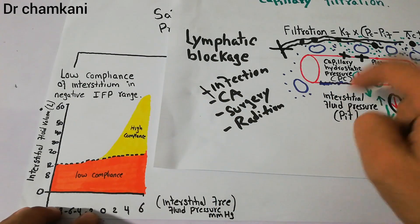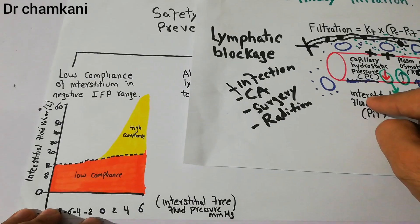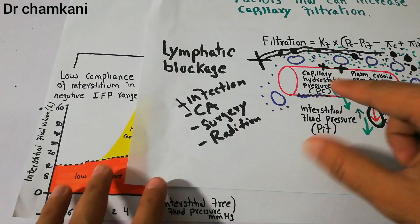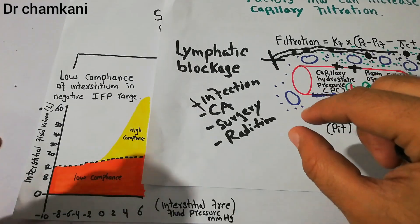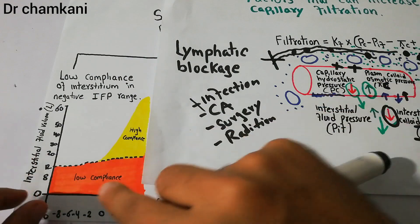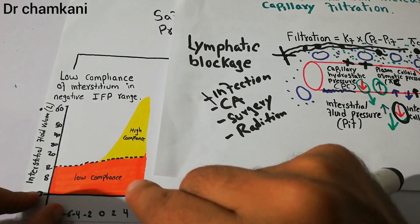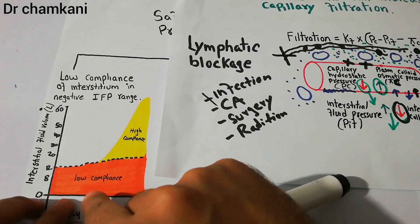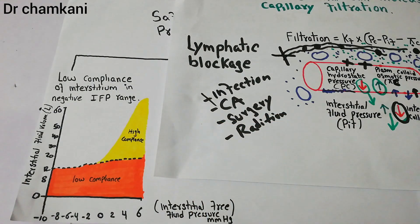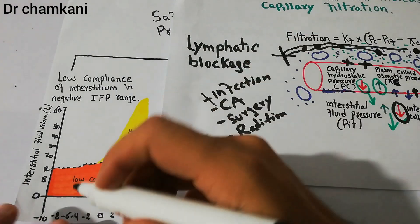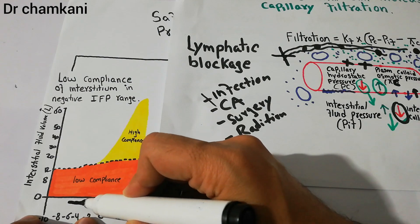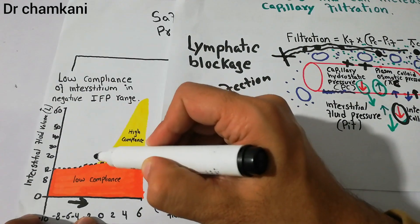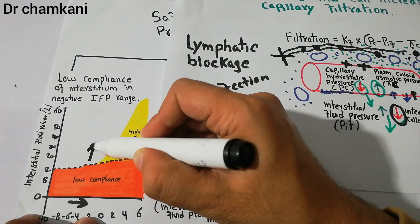In the negative range, due to even a small addition of volume, the interstitial fluid pressure increases substantially — for example from minus 4 to 0 mmHg — with only a small increase in volume. So the increase in pressure in the low compliance region with a small addition of extra volume is very high, but the increase in volume itself is not that much.